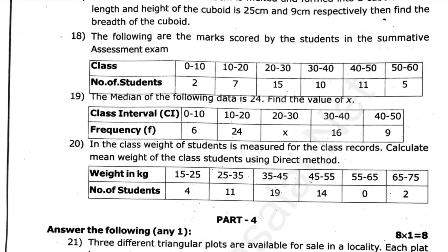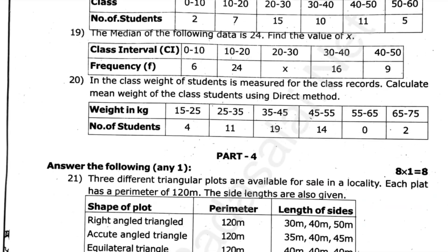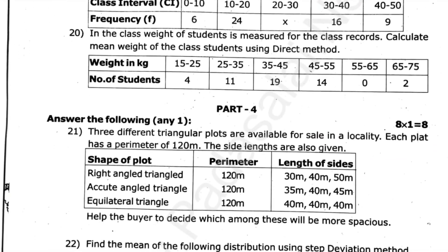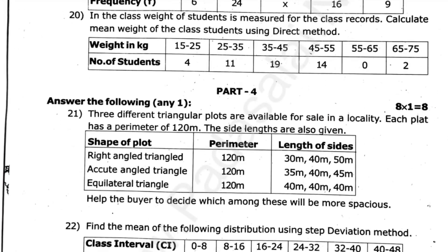If you look at the size of the graph, you can see the size of 8 marks. 21, 22. Three different triangular plots are available for sale in the locality. Each plot has a perimeter of 120m. The side lengths are also given.